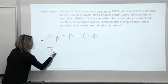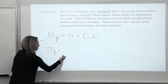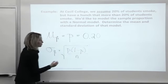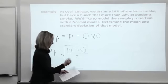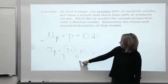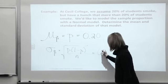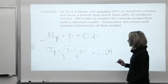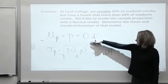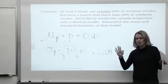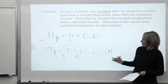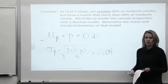Joe just got done finding the mean and standard deviation of that model. The mean of the sample proportions, mu sub p-hat, equals the population proportion, which is 0.20. The standard deviation of the sample proportions is the square root of p times (1 minus p) over n. Plugging in 0.2 and sample size 100, we get 0.04. So sample proportions are centered at 20% with a standard deviation of about 4%.